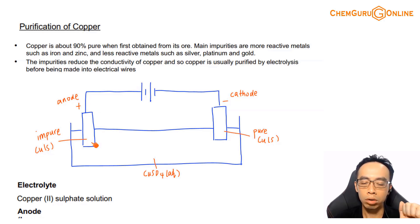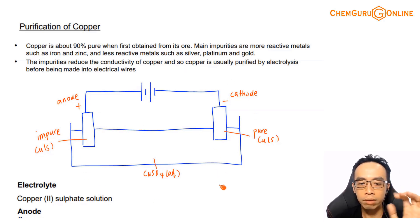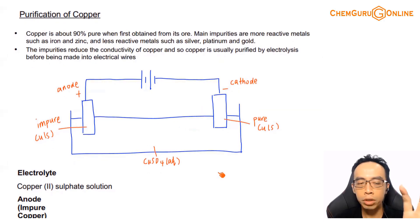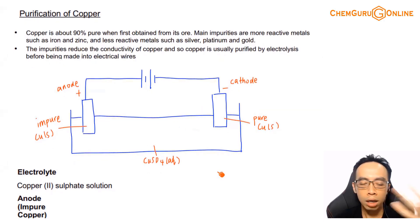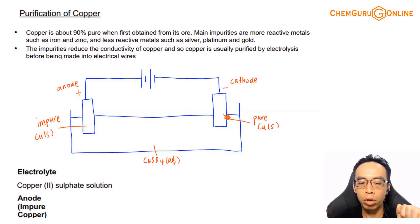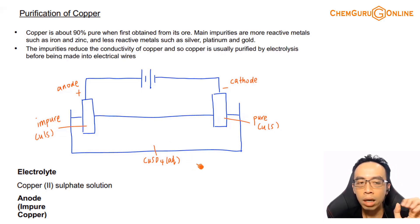To get pure copper, the setup is very simple — just a basic electrolytic setup. The anode is impure copper, the cathode is pure copper, and the electrolyte is copper sulphate solution.